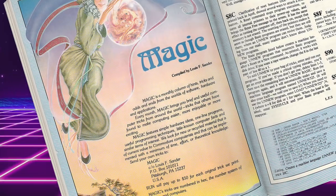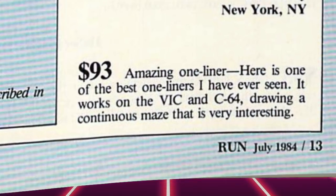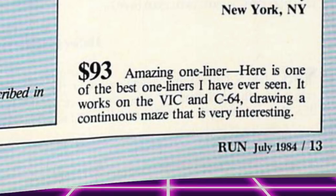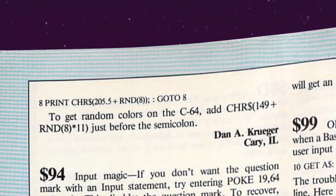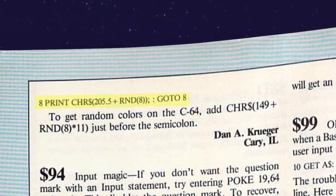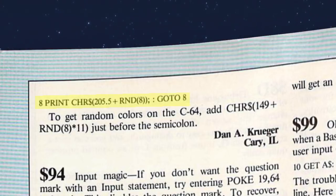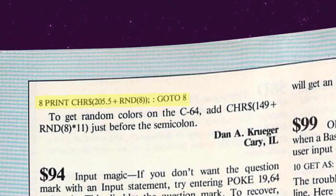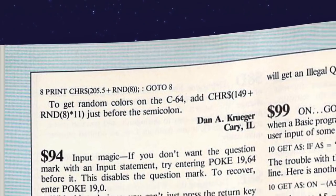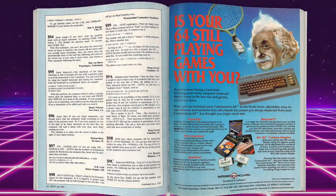In July of 1984, someone submitted this to the Magic column, saying: 'Amazing one-liner — here's one of the best one-liners I've ever seen. It works on the VIC and the C64, drawing a continuous maze.' Turning the page, there at the top we have our one line of code. It uses 8 rather than 10 as the statement number and passes 8 to the random function rather than 1, but other than that it's the same exact code as on the front of Nick Montfort's book. We should also thank Dan Kruger for posting this code all those years ago.